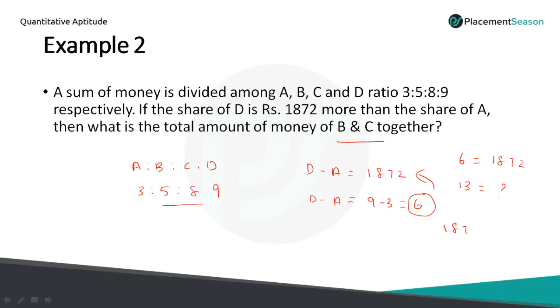4056. So 1872 into 13 by 6. Simplify and you will get the answer, 4056.